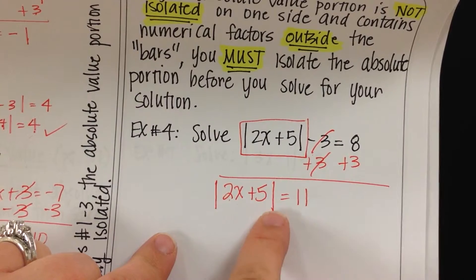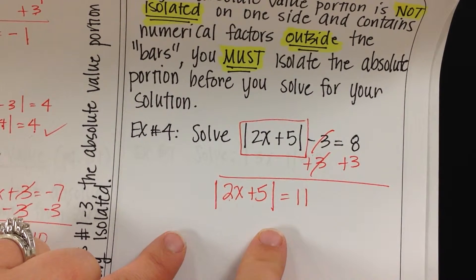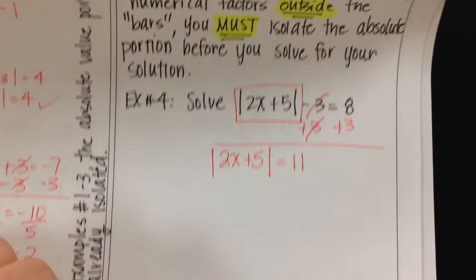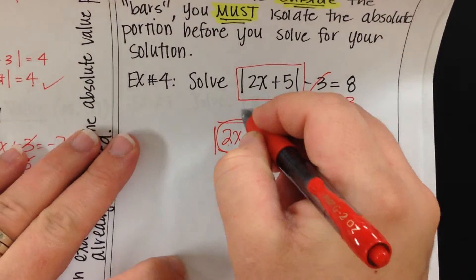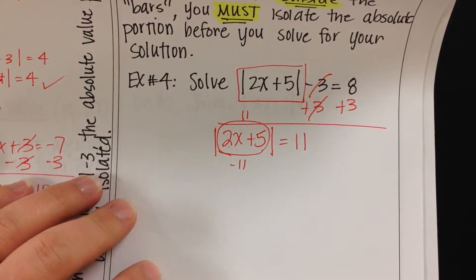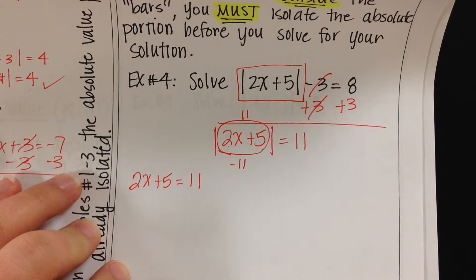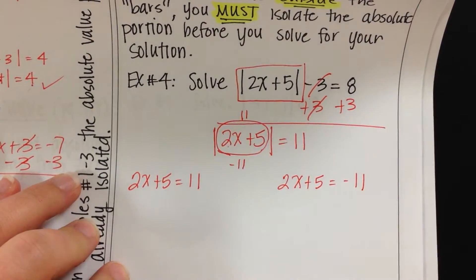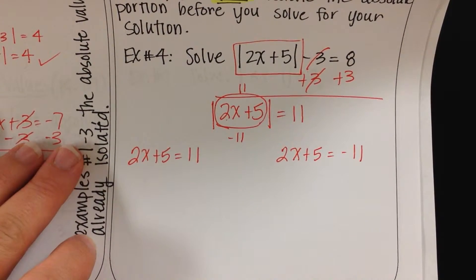Now, from here, my absolute value is isolated. Now I can create my two separate equations. Remember, we're going to look at the inside portion needs to be 11 or negative 11. So I'm going to set 2x plus 5 equal to positive 11 and 2x plus 5 equal to negative 11 and then I'm going to solve from here.